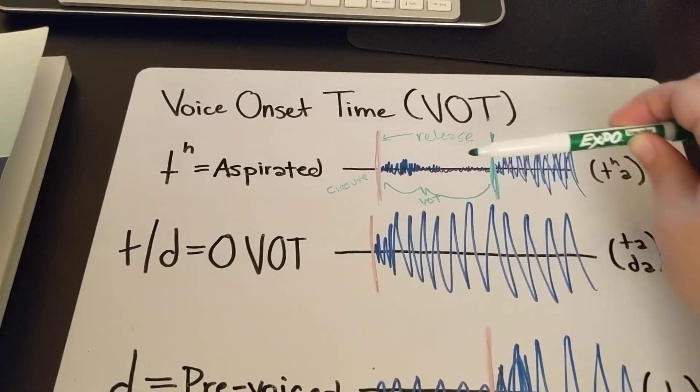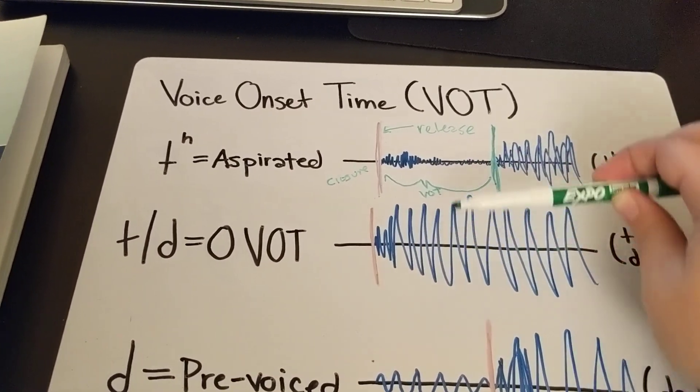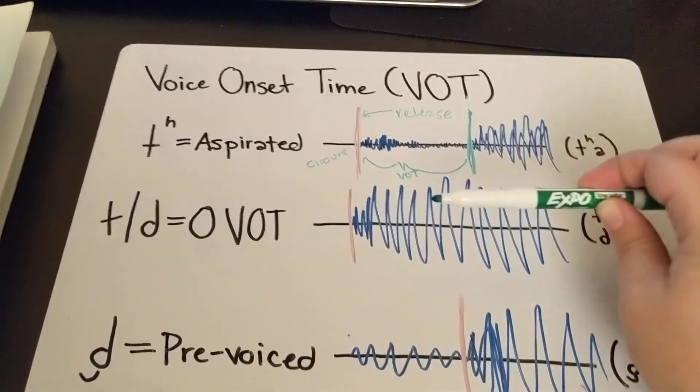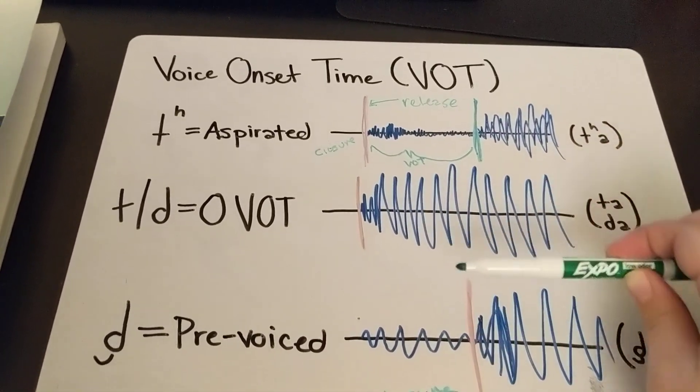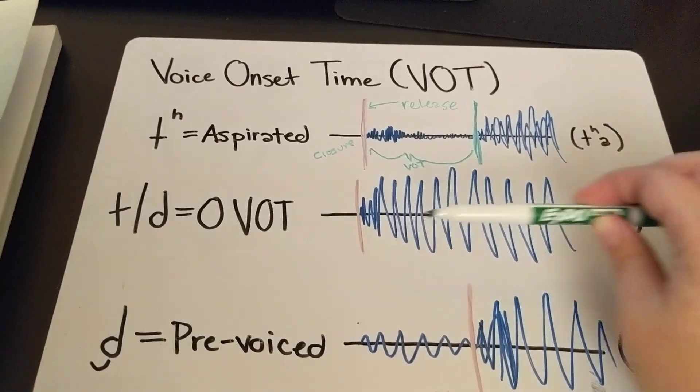what we call a T that's somewhere in between here and here usually, and what we call a D is somewhere in between here and here. It's usually somewhere around here.